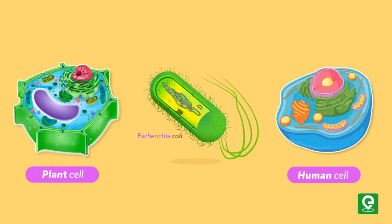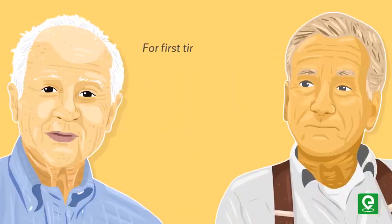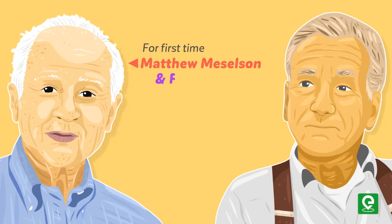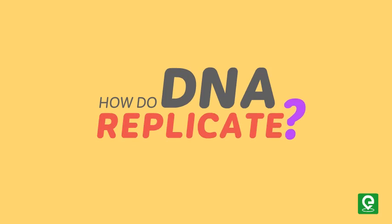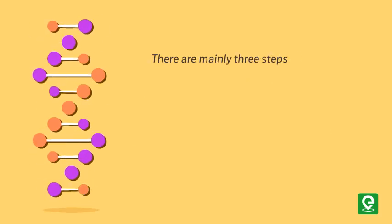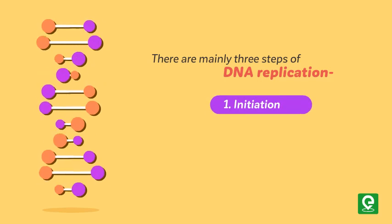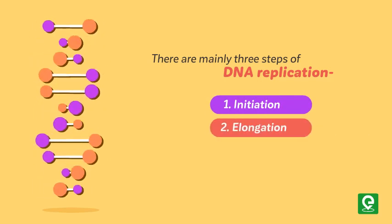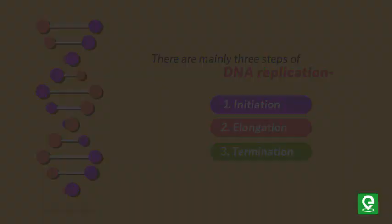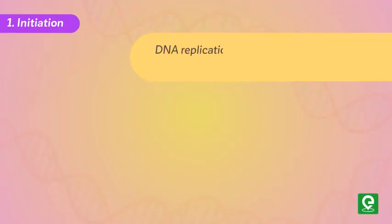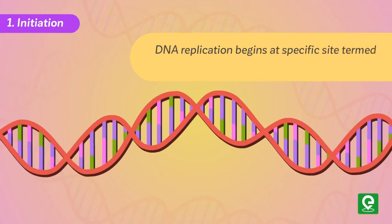For the first time, Matthew Meselson and Franklin Stahl performed an experiment on Escherichia coli in 1958 and proved semi-conservative replication. There are mainly three steps of DNA replication: number one, initiation; number two, elongation; number three, termination.